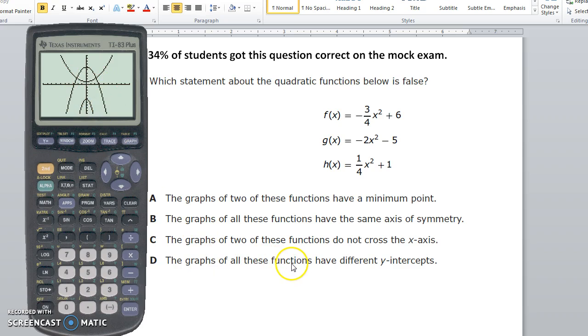The graphs of all these functions have different y-intercepts. That's true. Here's the y-intercept of the first graph. Well, not the first graph, but one of the graphs, the other graph, and the other graph. So all three y-intercepts are different. So that is true. And the answer I wanted was the one that was false. The only one that was false was A. The graphs of two of these functions have a minimum point.